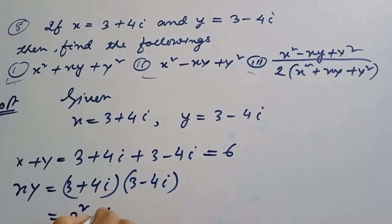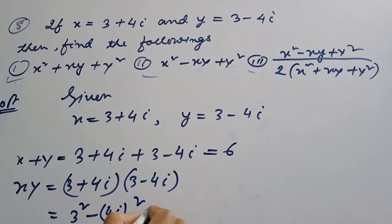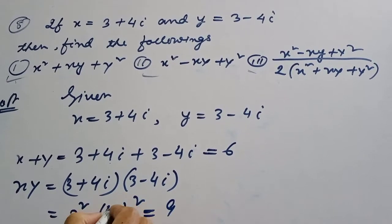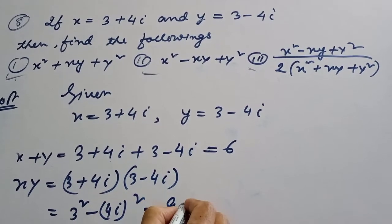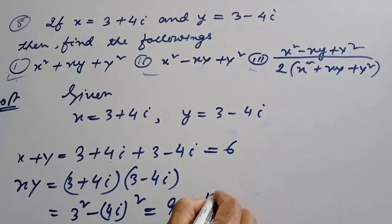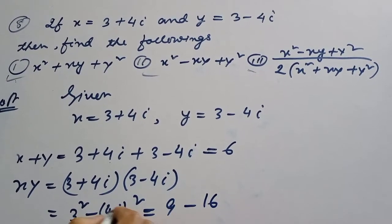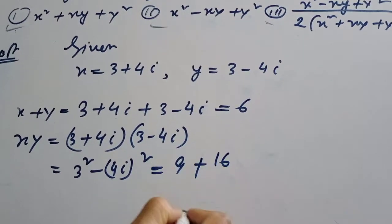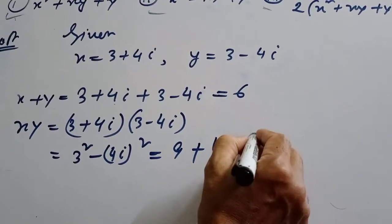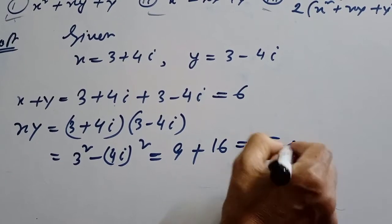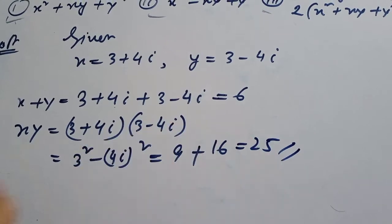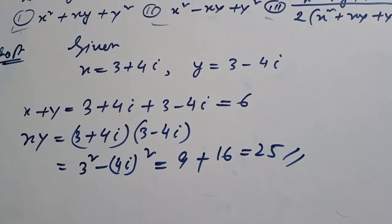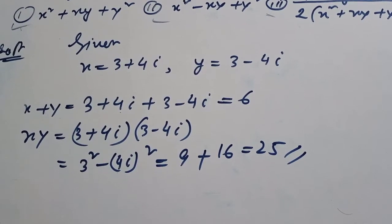t squared. This is equal to 4i squared, this is equal to 16i squared. Minus minus, this is plus. So 9 plus 16 equals 25.